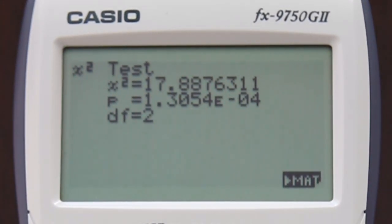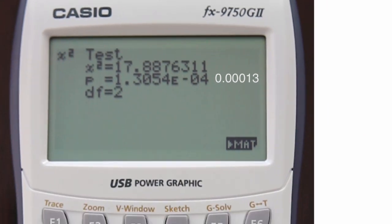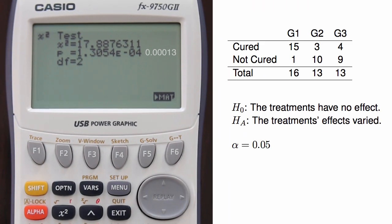The test statistic is 17.9, and the p-value is 1.3e-04, which is the same thing as 0.00013. Because the p-value is smaller than the significance level, we reject the null hypothesis.